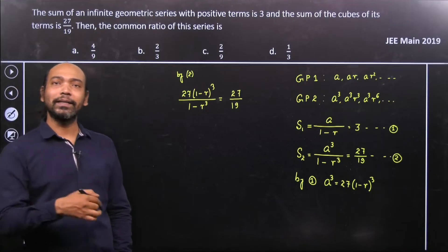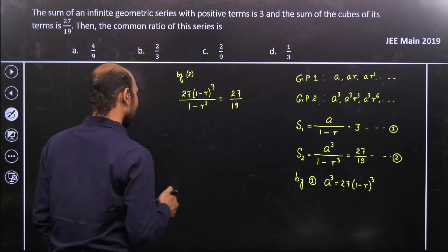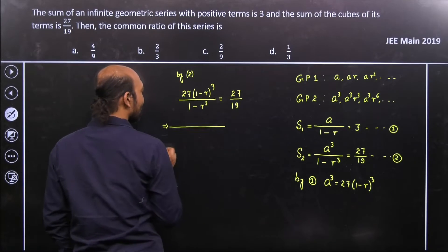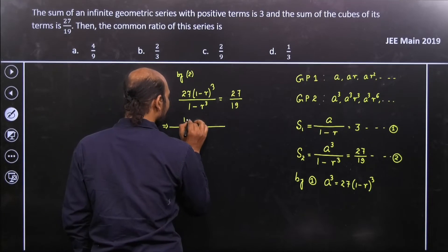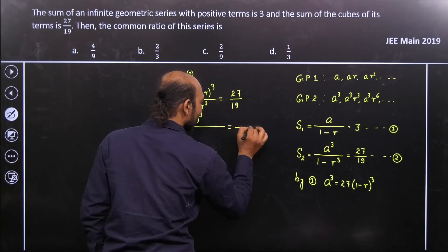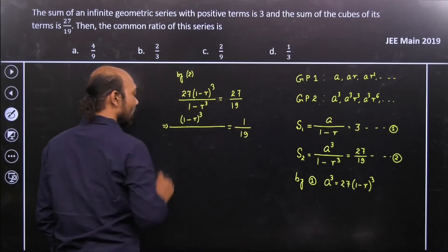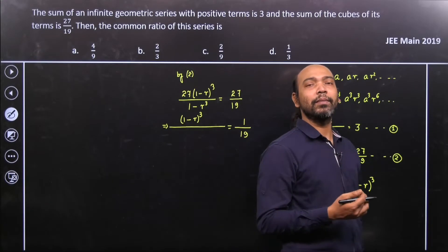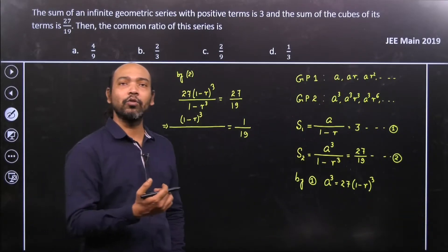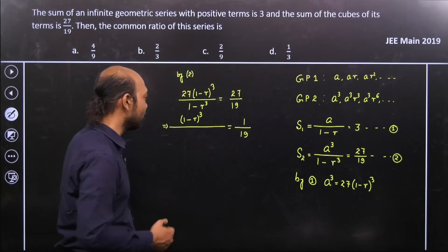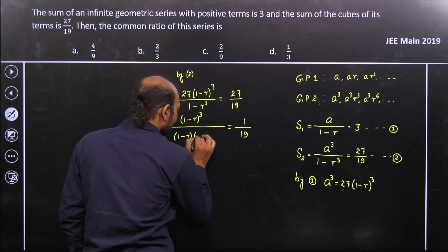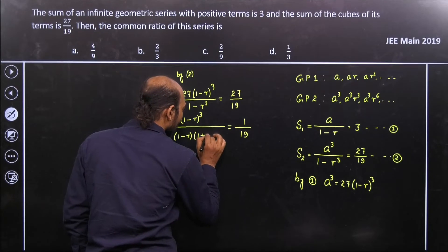We can cancel out the appropriate terms. The 27 cancels, leaving (1 − R)³ divided by (1 − R³) = 1/19. Now, 1 − R³ can be written using the formula A³ − B³ = (A − B)(A² + AB + B²), so 1 − R³ = (1 − R)(1 + R + R²). We can write (1 − R) multiplied by (1 + R + R²).